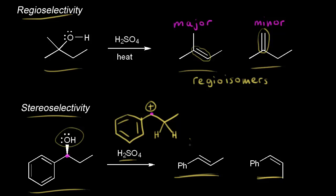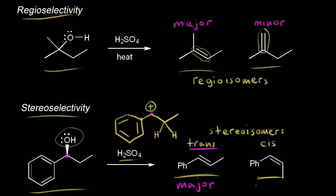This would be the trans product, and this would be the cis product. These are stereoisomers, and this reaction is stereoselective — one stereoisomer is favored over the other. In this case, the trans product is the most stable product, so this is the major product, favored over the cis, which is the minor product.